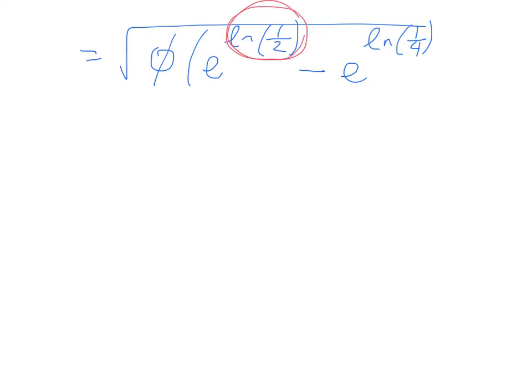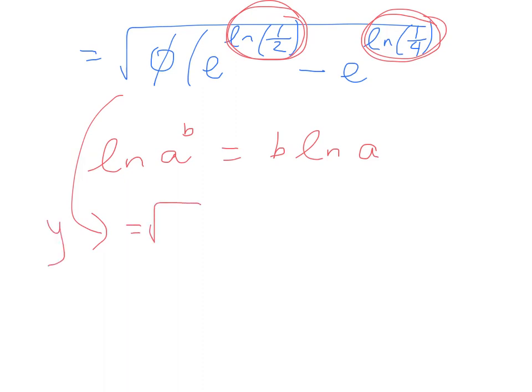That equals the square root of phi times e to the power of log of 1/2 minus e to the power of the log of 1/4. All I'm doing here is I'm just manipulating what we had using my log rules. The log of a to the power of b is equal to b times the log of a. In year 12 you learnt these rules with logs to any base, and what we're using here is the log to base e. Nothing too bad here at all. This simplifies to give me y equals the square root of phi times 1/2 minus 1/4, which is equal to the square root of phi times the square root of 1/4, which is simply root phi divided by 2.